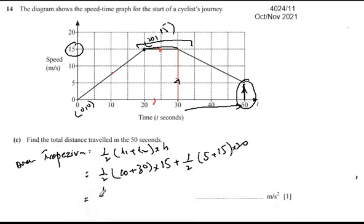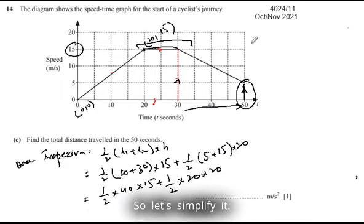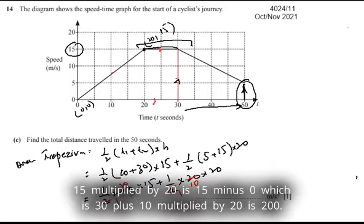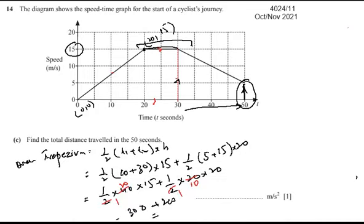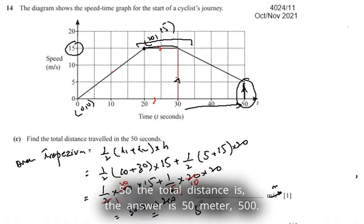Now we simplify: one upon two, 10 plus 30 is 40 multiplied by 15, plus half, 15 plus 5 is 20, multiplied by 20. Let's simplify it: 20 multiplied by 15 is 300, plus 10 multiplied by 20 is 200. So the total distance is 500. The answer is 500 meters.